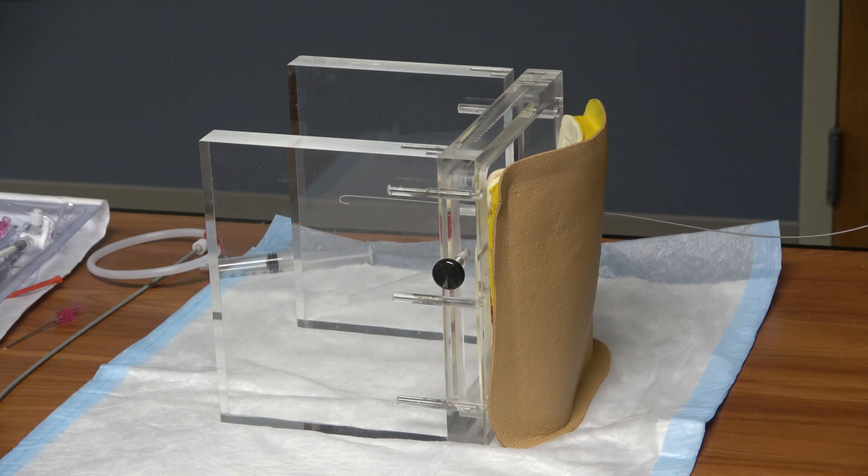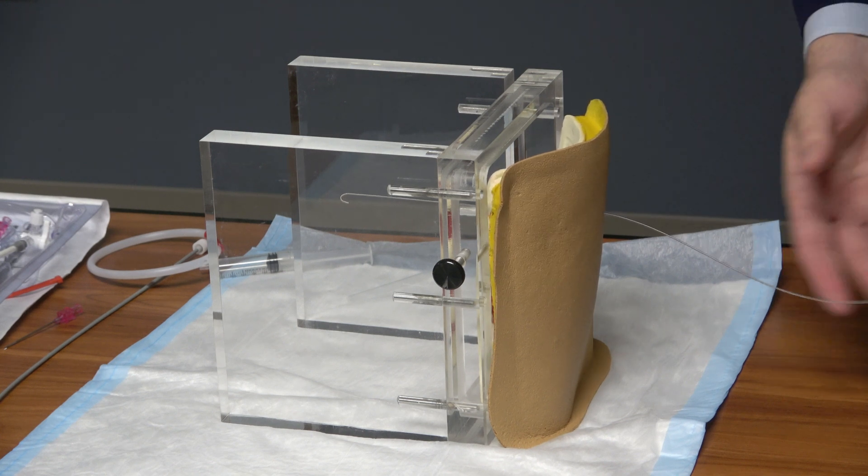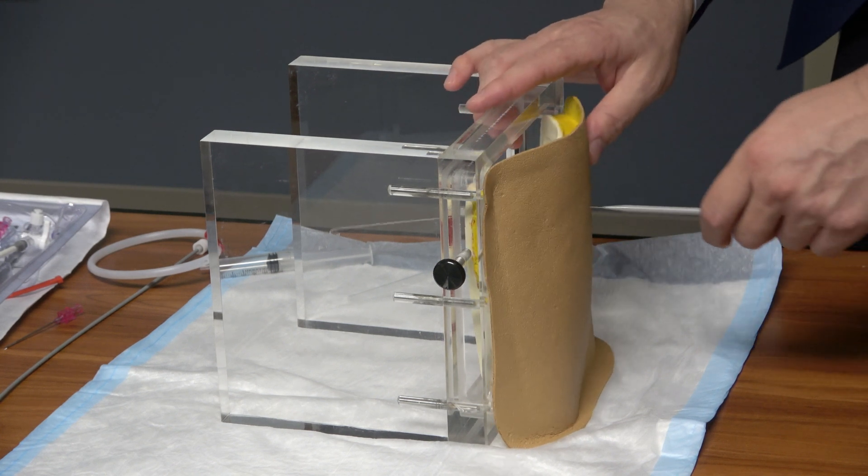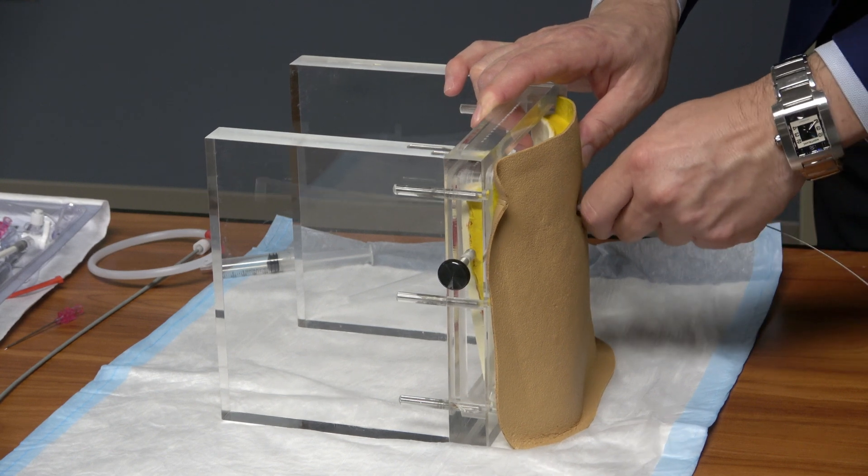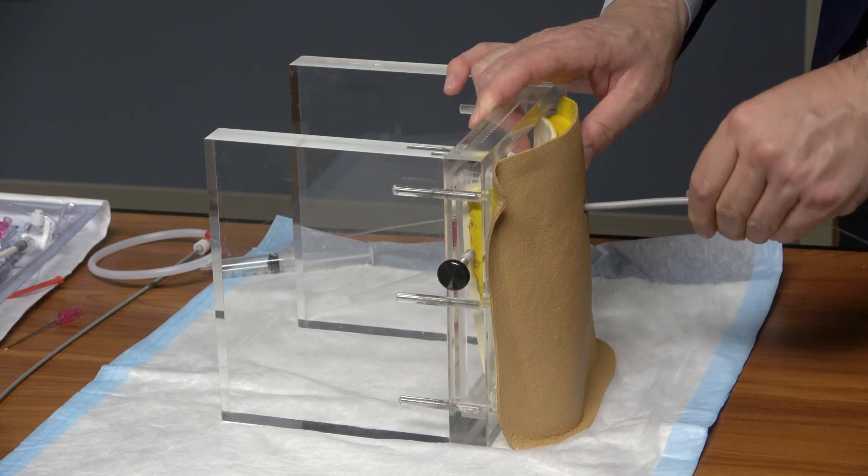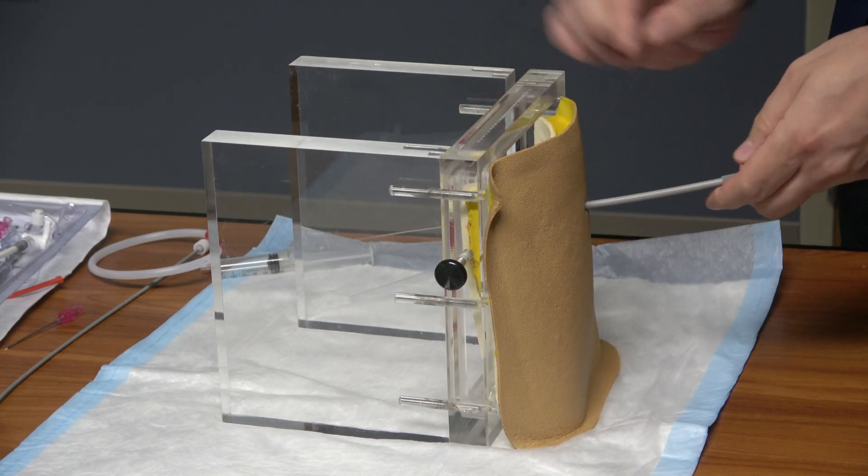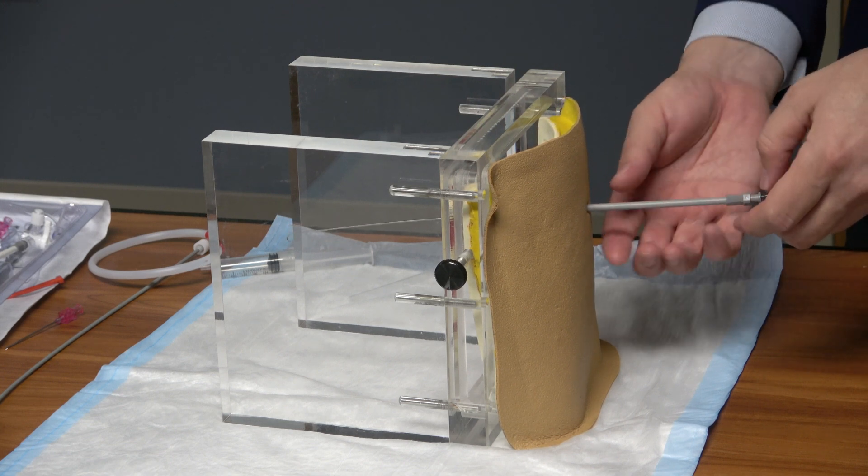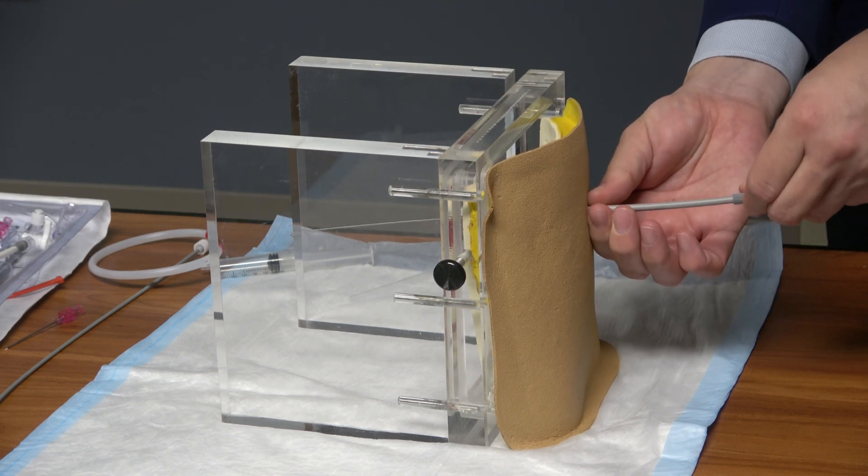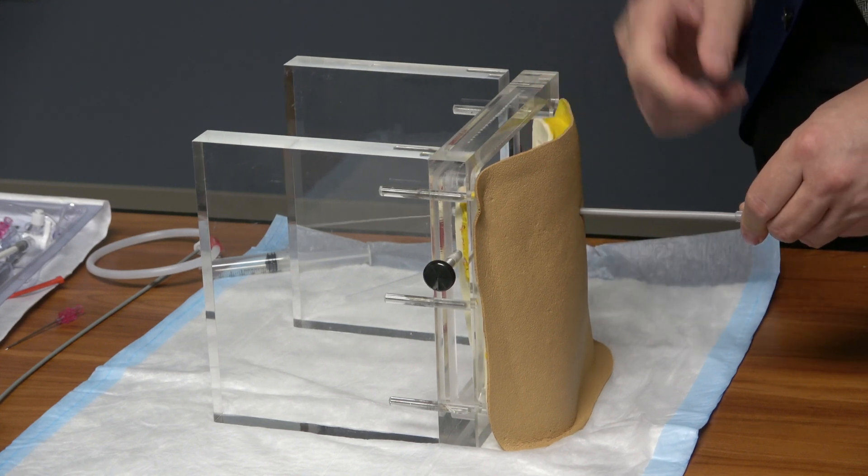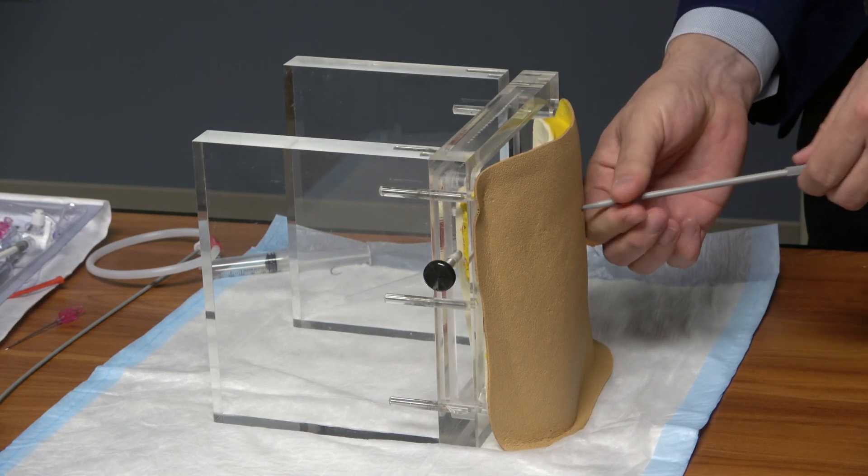So you have to do the dilator first to dilate the chest wall to create a little hole so things will go in. You don't have to put all the dilator in, just the length or the width of your chest wall. You can see it going there. You don't have to go all the way in.